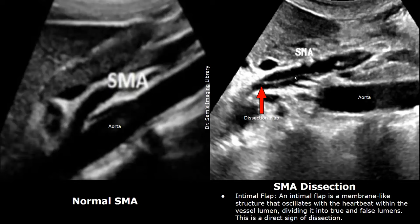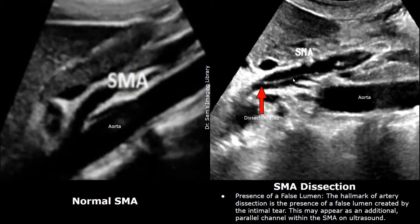The intimal flap will oscillate with the heartbeat within the vessel lumen. There will be a true lumen and a false lumen — the area below the intimal flap is the false lumen, while the main lumen of the artery is the true lumen. This is a direct sign of dissection. The combination of an intimal flap and a false lumen is a strong sign of arterial dissection.